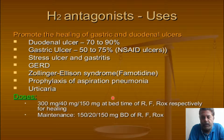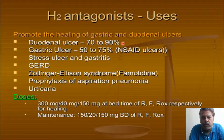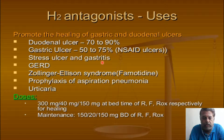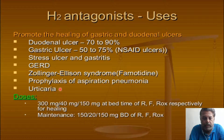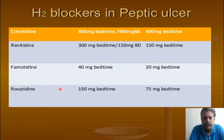Cimetidine, ranitidine, and H2 blockers are used in the healing of gastric and duodenal ulcers with almost 70 percent efficacy. They can also be used in ICU settings for stress ulcers, gastritis, GERD, and Zollinger-Ellison syndrome where famotidine is the drug of choice. They can also be used for prophylaxis of aspiration pneumonia. The dose can be given OD, BD, HS, or SOS accordingly.